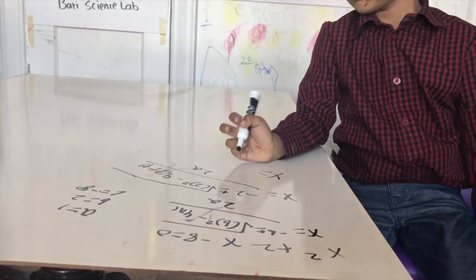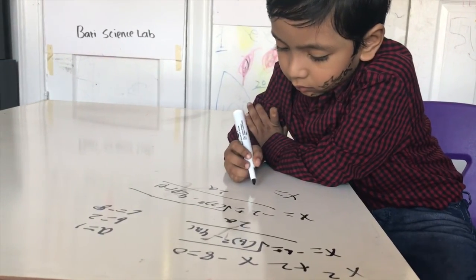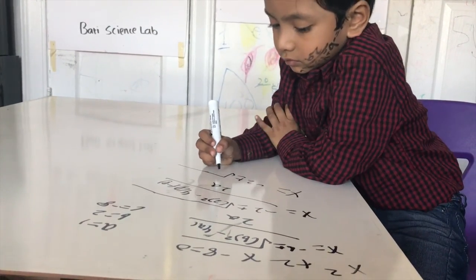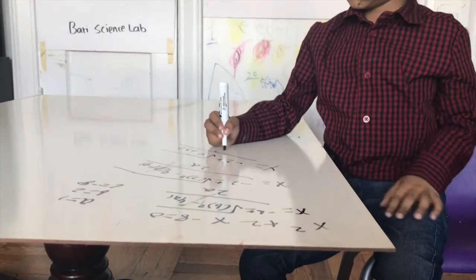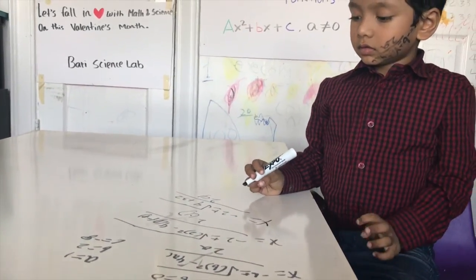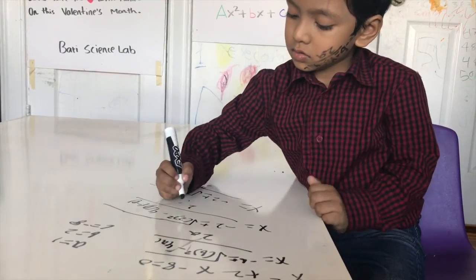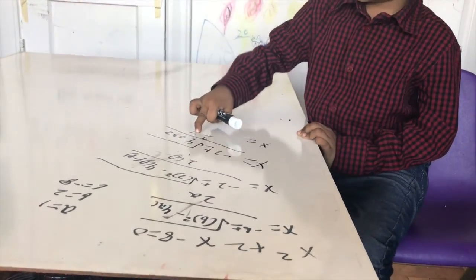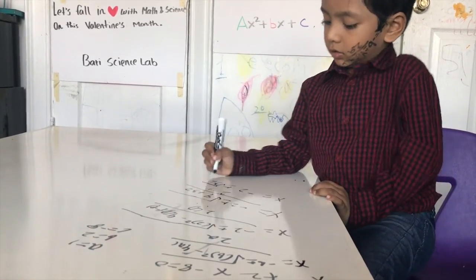Negative times negative equals positive 4, plus 4 times 1 is 4, and 4 times 8 is 32. So we get negative 2 plus or minus the square root of 4 plus 32, over 2 times 1. That gives us the square root of 36 over 2.